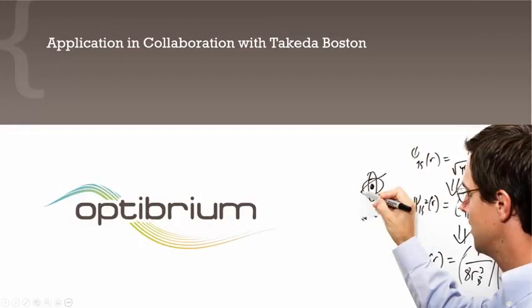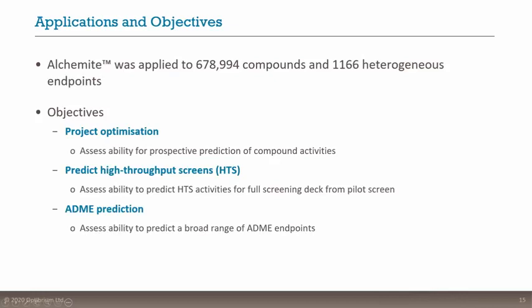That's a quick introduction to the Alchemite method. We can send you the paper if you're interested in more details. Now let's move to application to a real-world dataset in collaboration with Scott at Takeda. This is quite a large dataset — nearly three-quarters of a million compounds over a thousand assay endpoints.